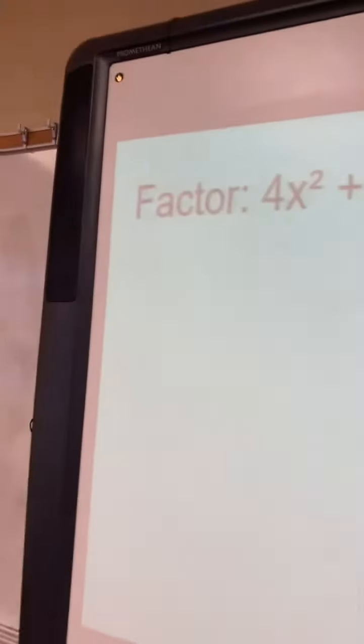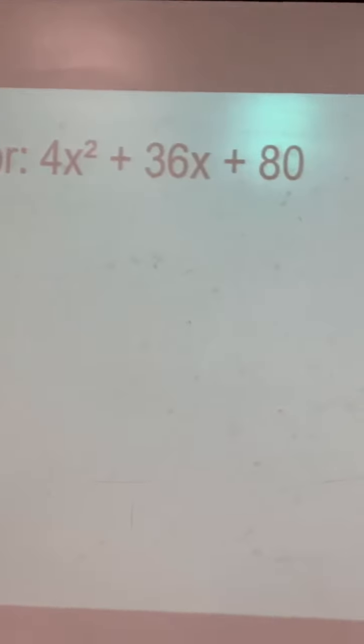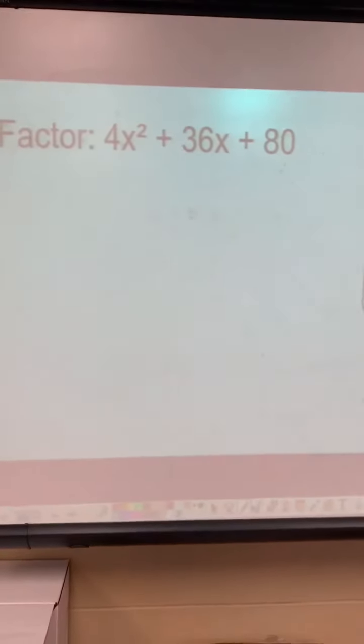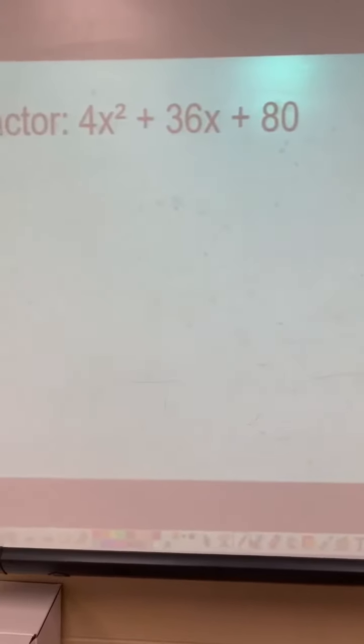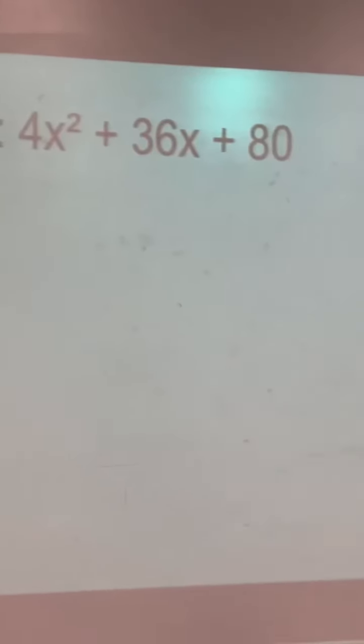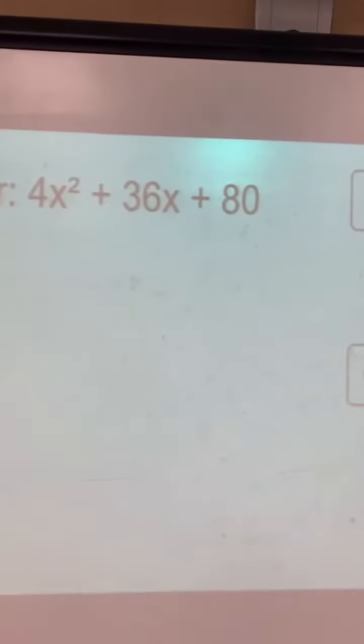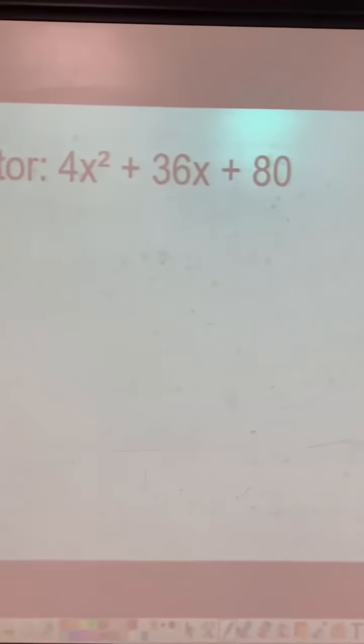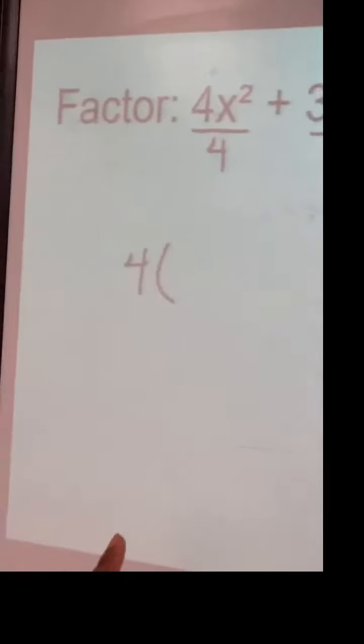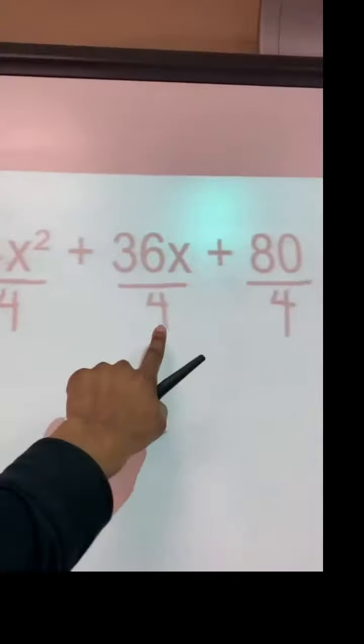All right, so here we go. We are to factor 4x² + 36x + 80. So the first thing we're going to look at is the problem itself. And what I notice is I see a 4, 36, and 80. Every last one of those numbers are divisible by 4. So 4 is the common factor.